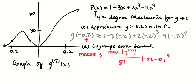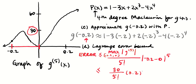Up in the numerator, we evaluate the maximum between the centering point and the approximation point — the maximum of g's fifth derivative on [−0.2, 0]. If that maximum is 30, the Lagrange error bound is 30/5! × (0.2)^5.